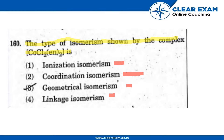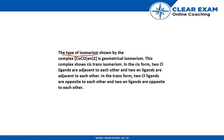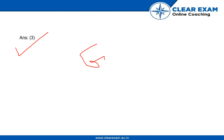The type of isomerism shown by the complex [CoCl₂(en)₂] is geometrical isomerism. This complex shows cis-trans isomerism. In the cis form, two Cl ligands are adjacent to each other and two en ligands are adjacent to each other. The correct answer is geometrical isomerism because it forms cis and trans isomers with the Cl₂ arrangement.